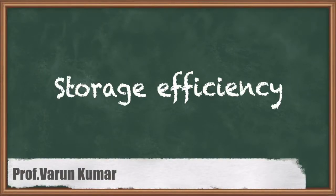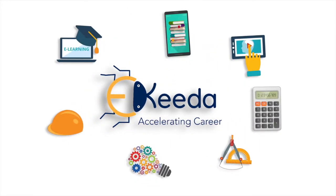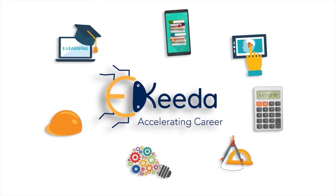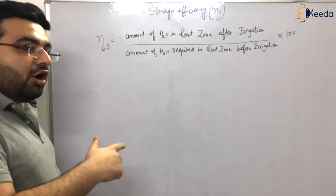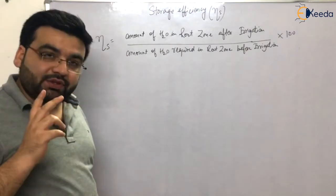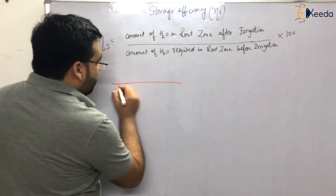Now let us understand storage efficiency. The word storage actually belongs to the root zone depth. What is actually happening is, let us say that this was a ground, okay, this was ground.